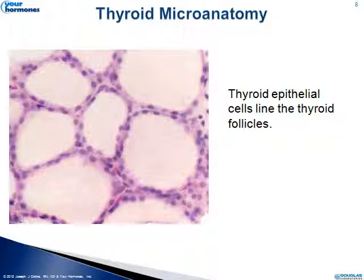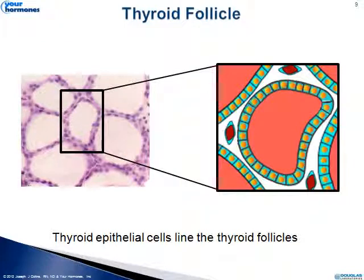To see how TSH affects thyroid function, we're going to look at the thyroid microanatomy. There are thyroid follicles that look like vacuoles or empty places without cells. The thyroid epithelial cells, or thyrocytes, line those thyroid follicles and secrete thyroglobulin into them. After that thyroglobulin has been acted upon by enzymes that attach iodine to it, the thyrocytes take it back up. The follicle is surrounded by thyrocytes, with blood vessels visible above and around the follicle.